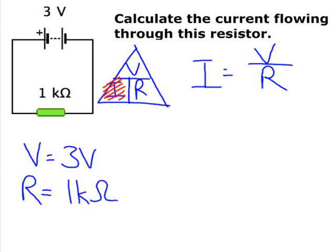When we're solving a problem with Ohm's law though, we don't want to work in kilohms, we have to be working in ohms. So remember to change your units. 1 kilohm is 1000 ohms.